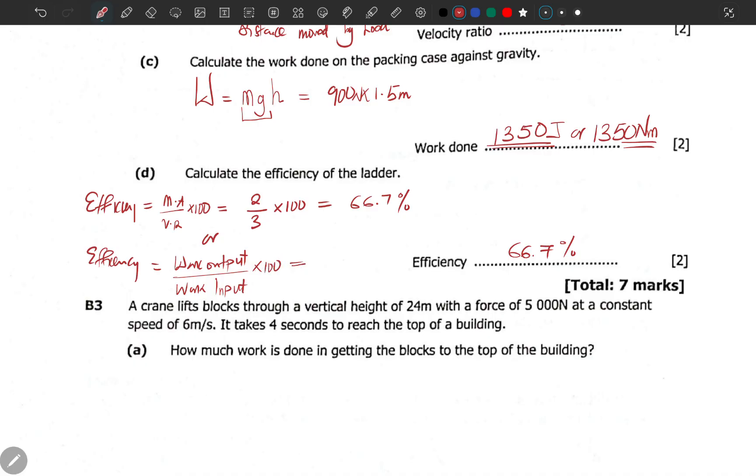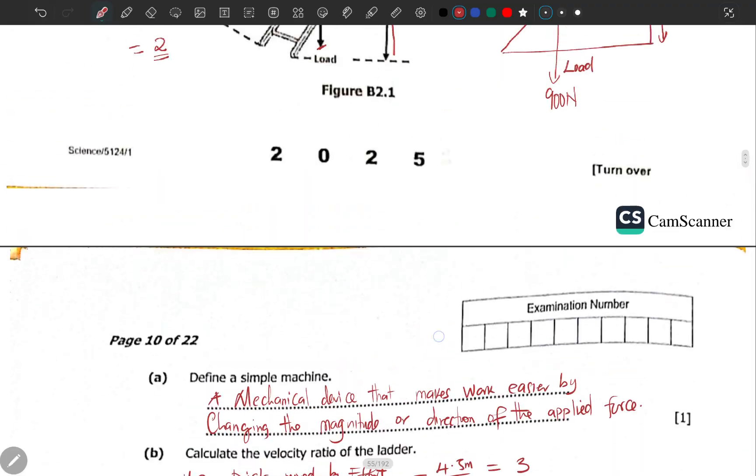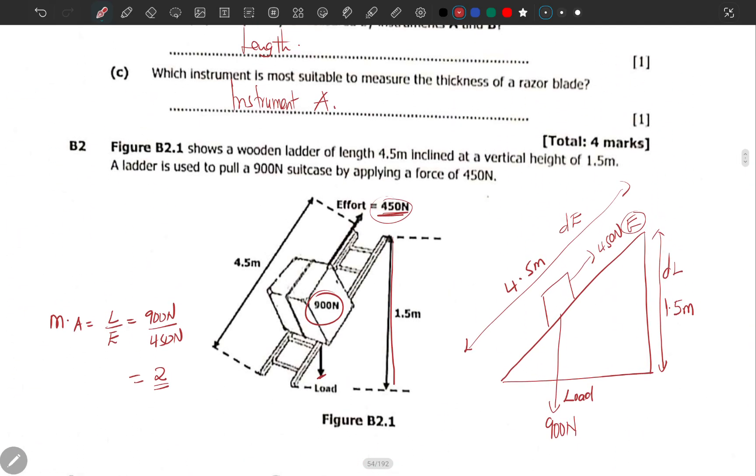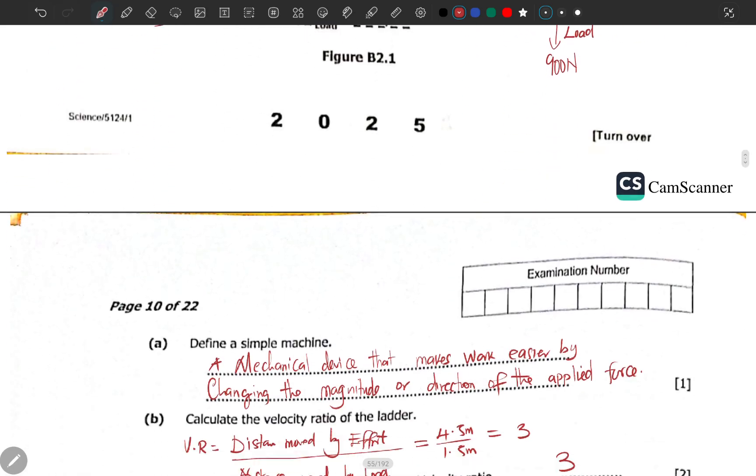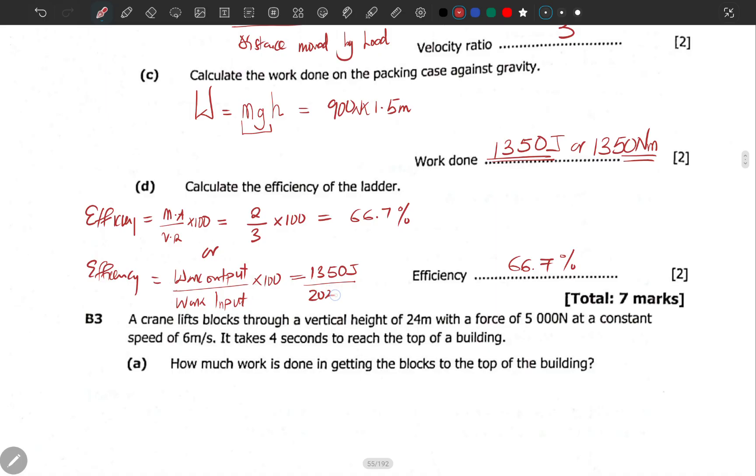What is our work output? Our work output is the work done against gravity. That you need to get in your mind. 1350 over, what about the work input? The work input is the work done due to the effort. The work done due to the effort. Work input is equal to the force 450 and the displacement 4.5. We will end up having our work as 2025 joules. You come and put it here, 2025 joules.